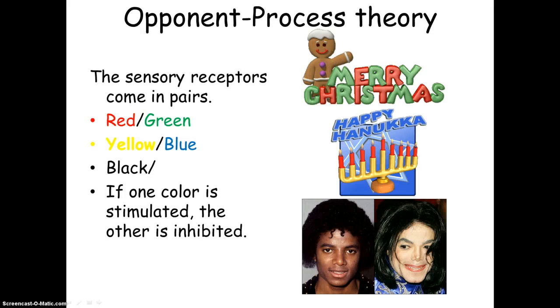So this theory explains the afterimage that you experienced in class. When you stare at a green square for a while and then you look at a white sheet of paper, you're going to see red because of this red-green combination. When you stare at a yellow square for a while and then look at a white sheet of paper, you're going to see its opponent color, blue. A man named Ewald Hering, H-E-R-I-N-G, came up with this opponent process theory.